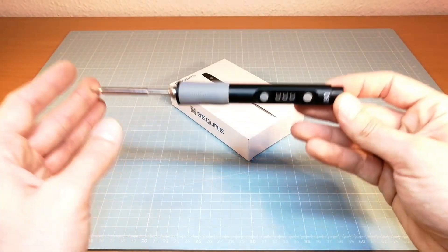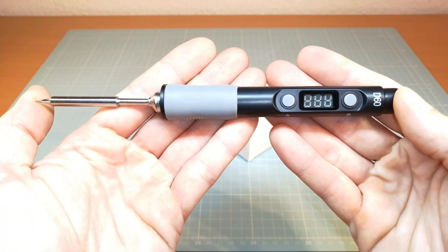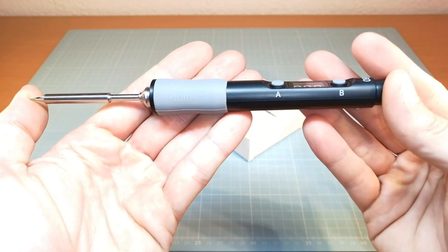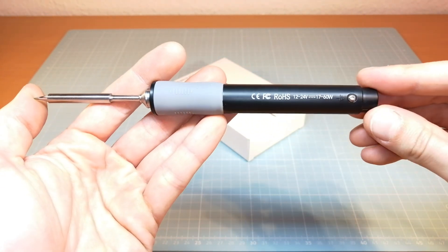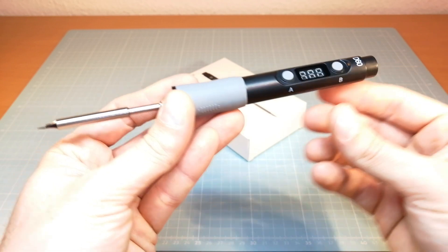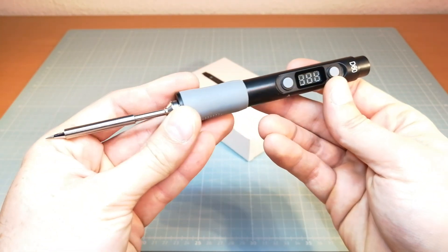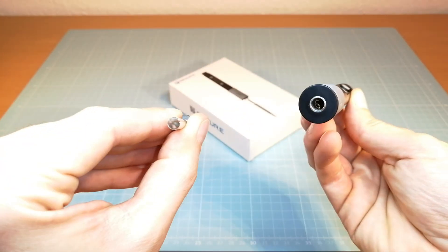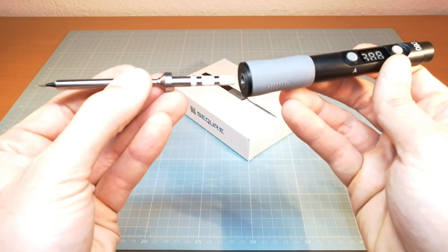Hey guys, welcome back to another video. This is a Secure SQD60B soldering iron with a working temperature from 100 up to 400 degrees, an LED display screen and removable soldering iron tips that we are going to check out in this video.